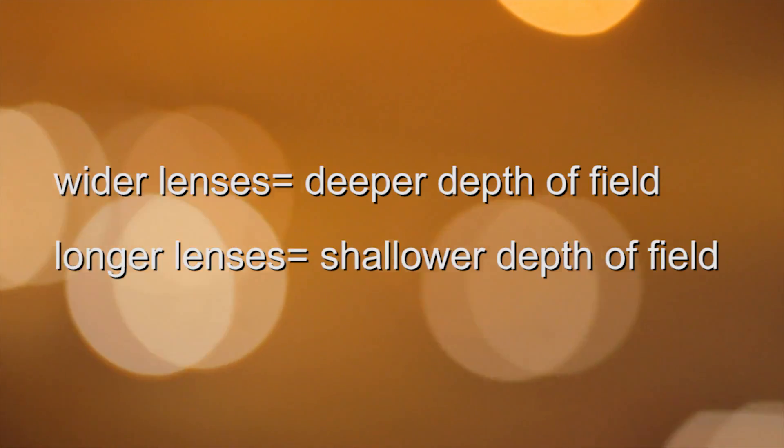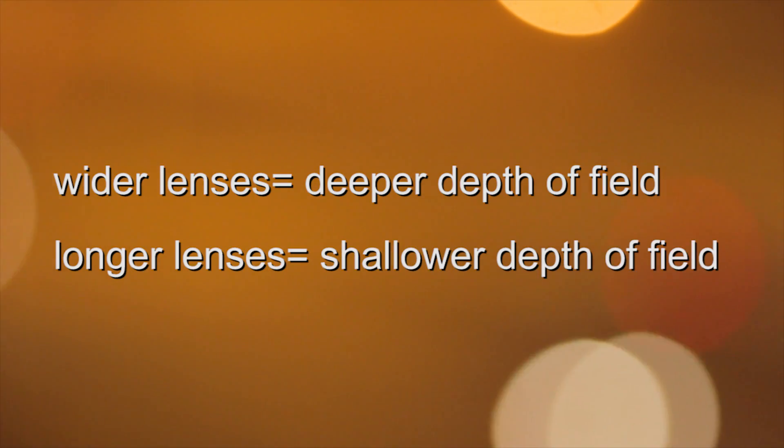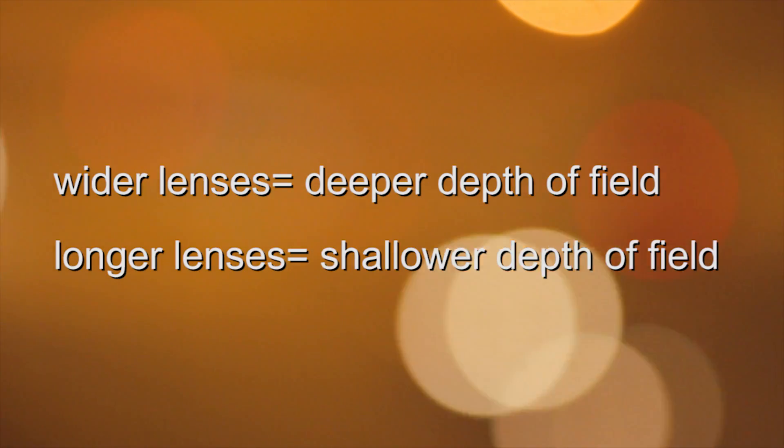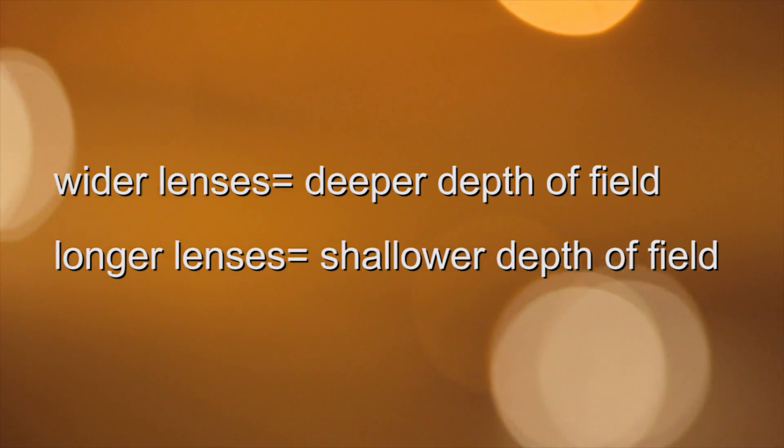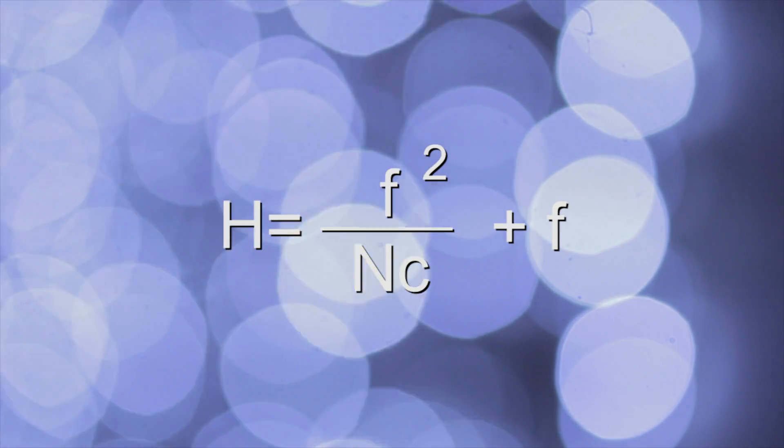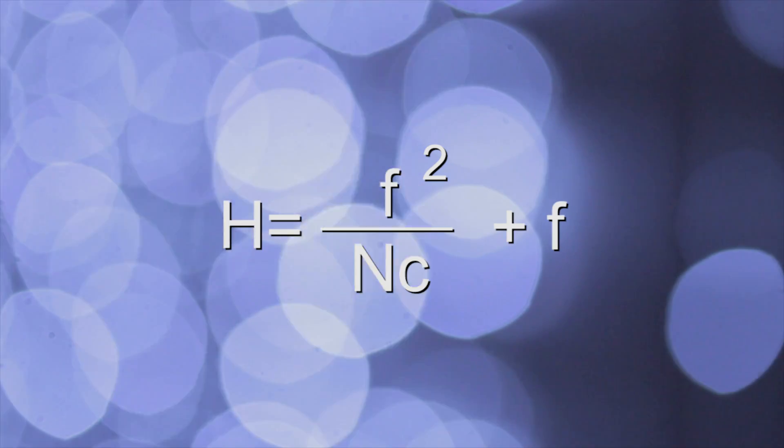Now keeping in mind that wider or smaller millimeter focal length lenses tend to have a much deeper depth of field, longer lenses or a higher millimeter focal length number will have a much smaller or shallower depth of field. For example, instead of using an 18mm wide lens, we could be switching to a 50mm lens.